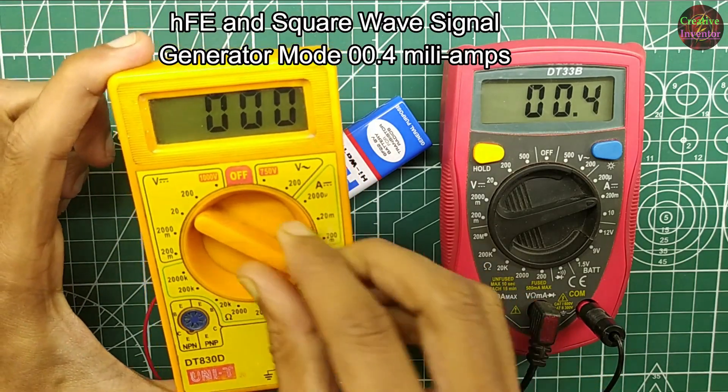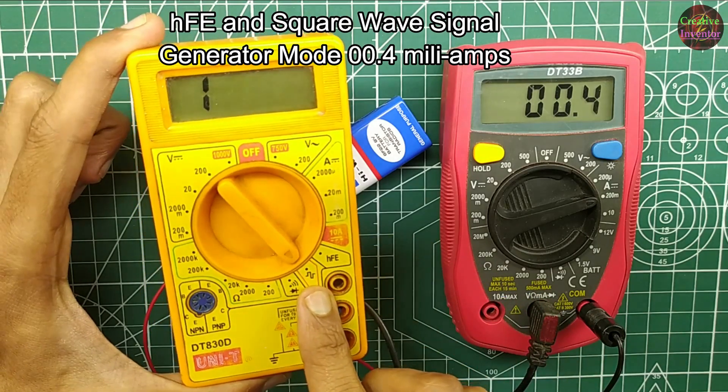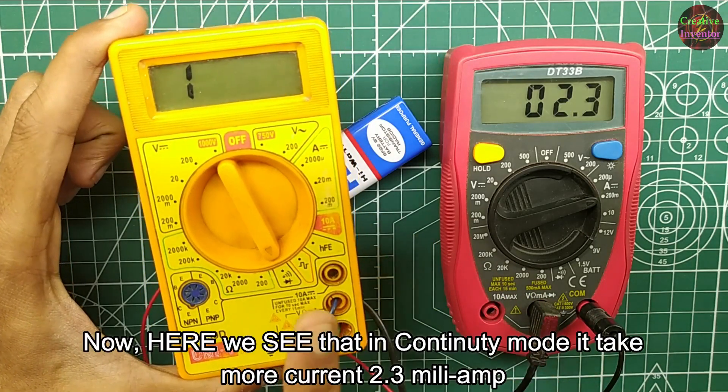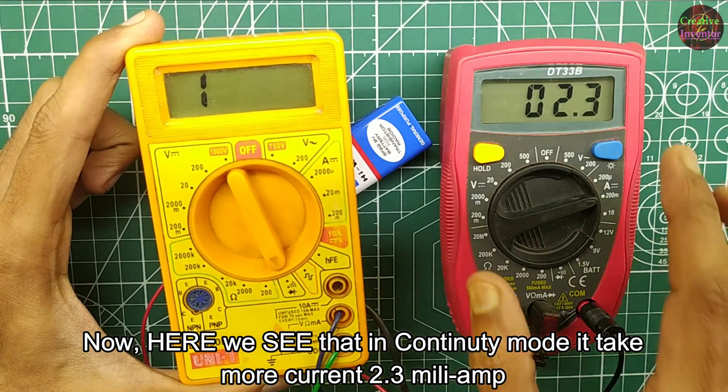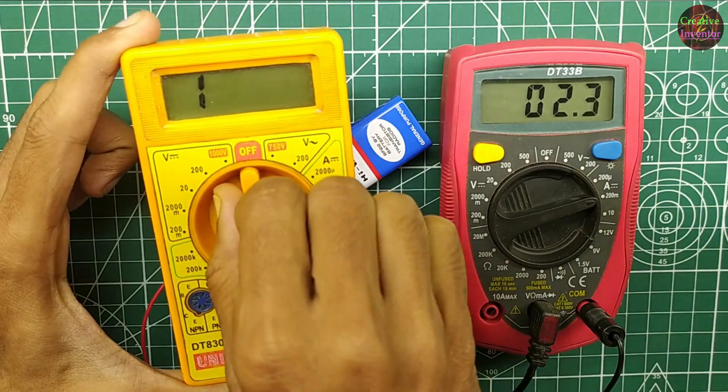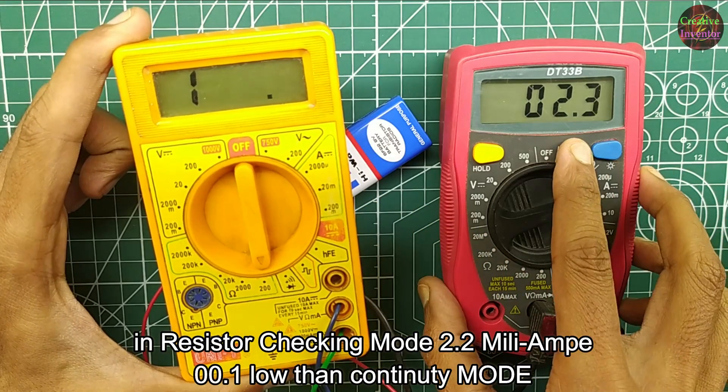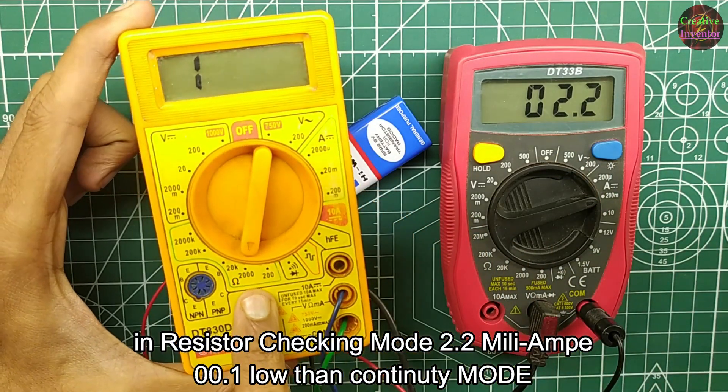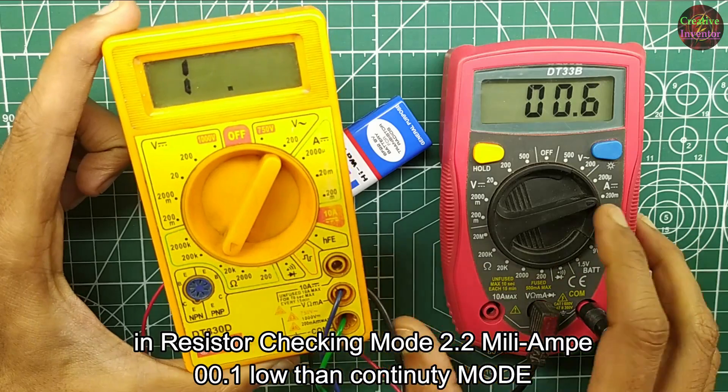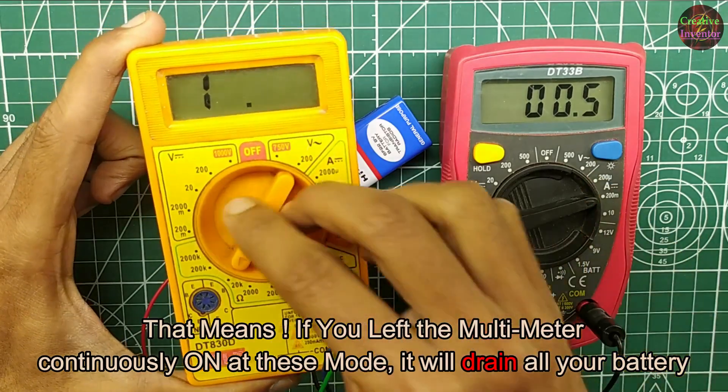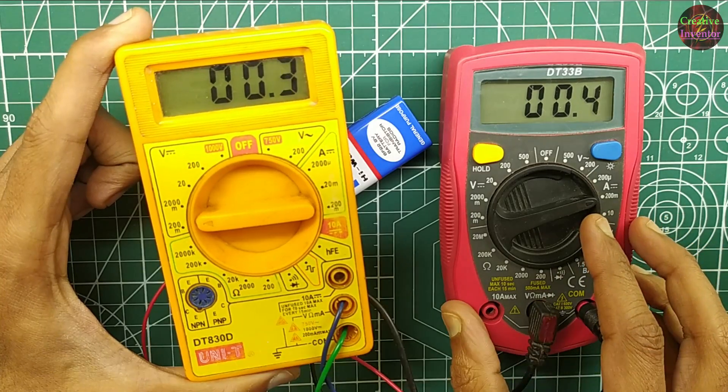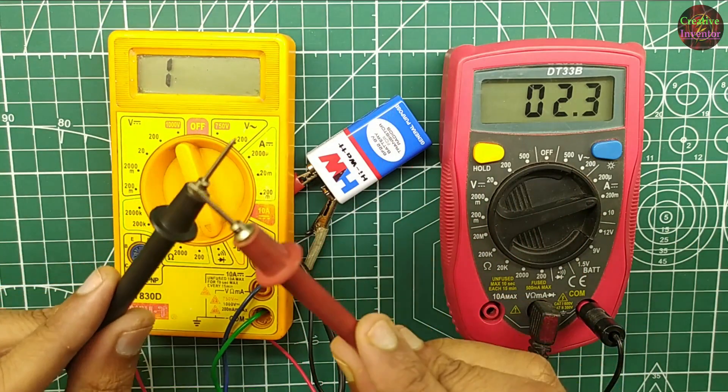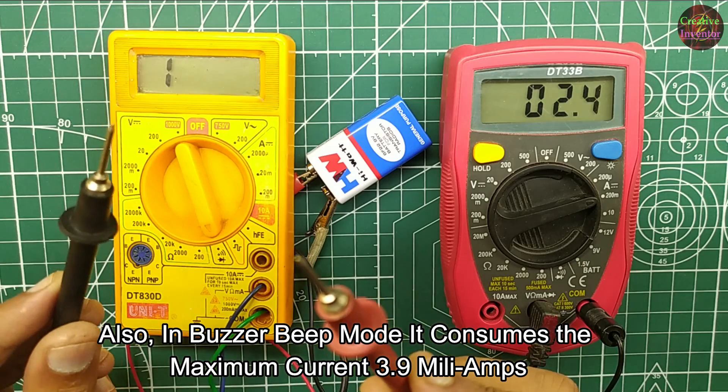HFE and square wave signal generator mode, 0.4 milliamps. Now here we see that in continuity mode it takes more current, 2.3 milliamps. In resistor checking mode, 2.2 milliamps, 0.1 lower than continuity mode. That means if you left the multimeter continuously on at these modes, it will drain all your battery.